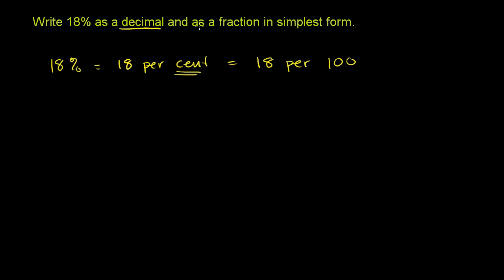Actually, I said I would do the decimal first, but we can start putting it into a fraction first. 18 per 100 as a fraction literally means 18 per 100. We're literally doing, so we're doing the fraction first. This literally means 18 per 100, or 18 hundredths.